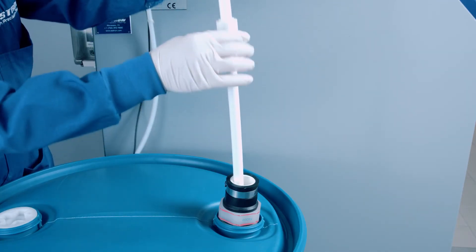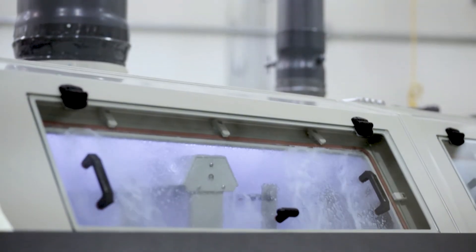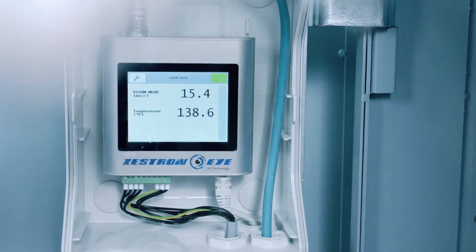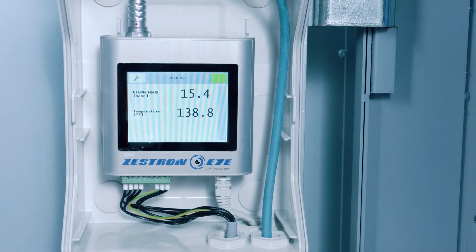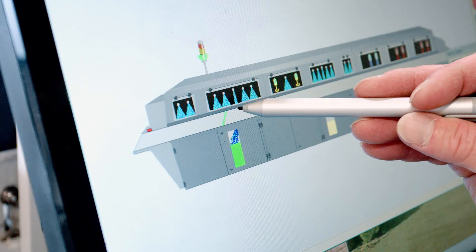It then distributes precise measurements of the necessary DI water or cleaning chemistry concentrate based on the concentration present in the wash tank. Through its 3P technology, the Zestron ICM receives and interprets data to automatically maintain a desired wash-bath concentration level in an in-line cleaning system.